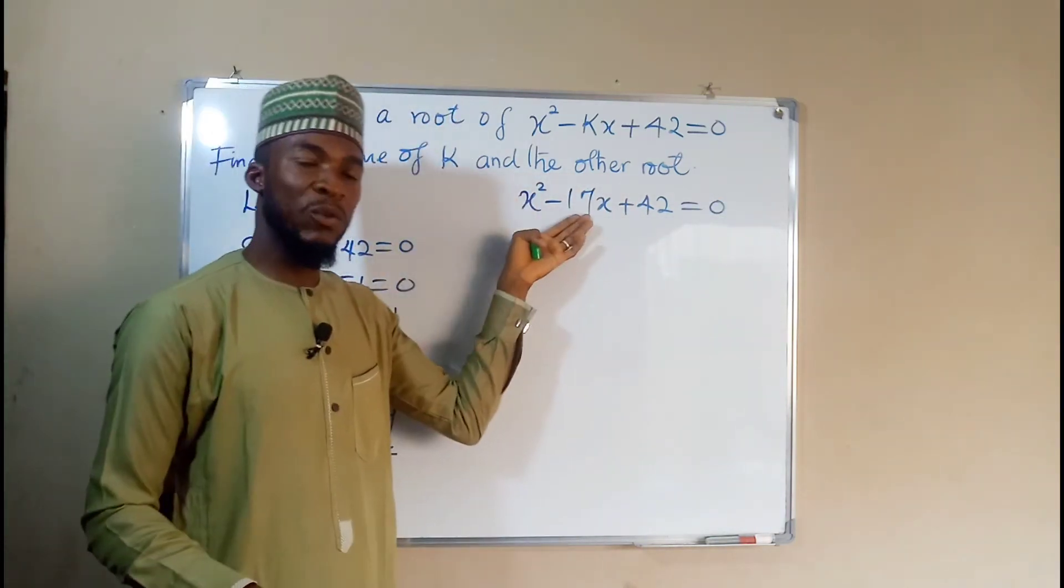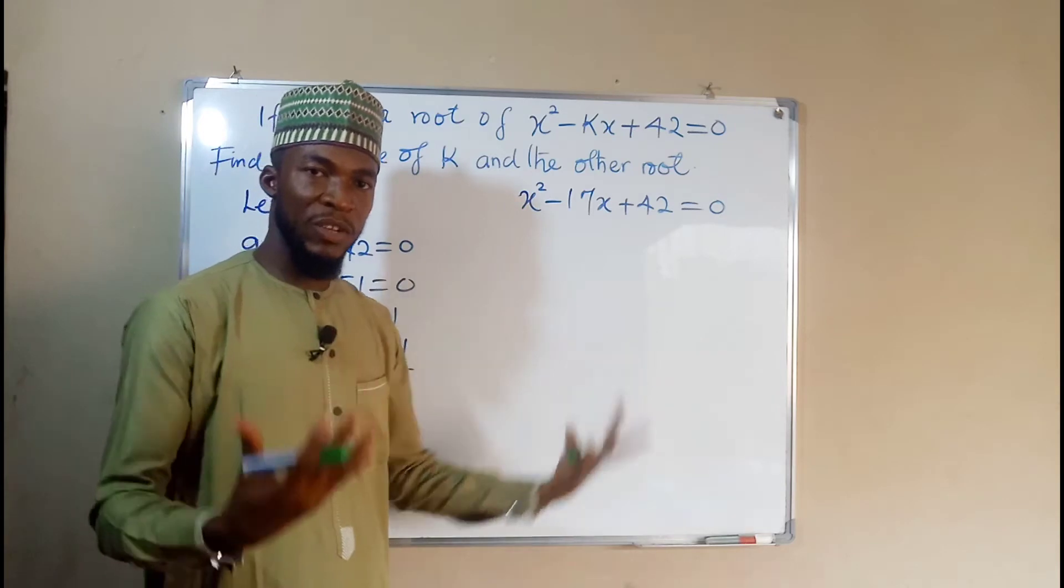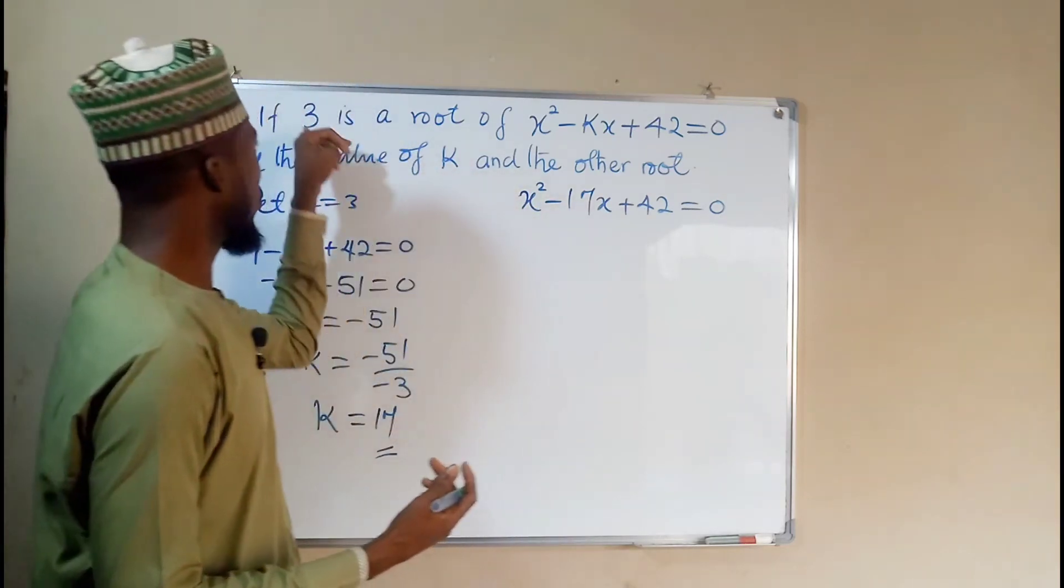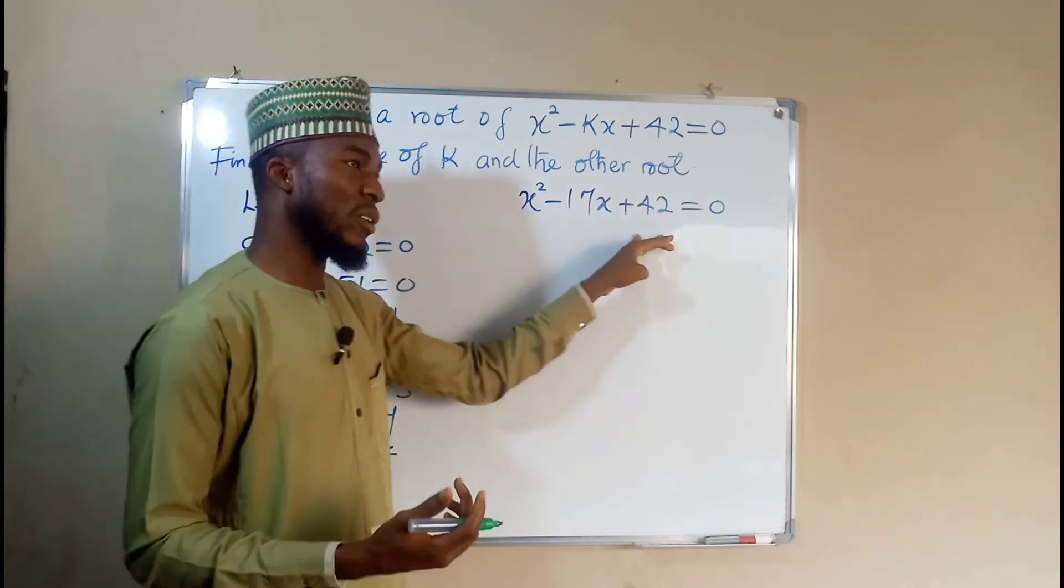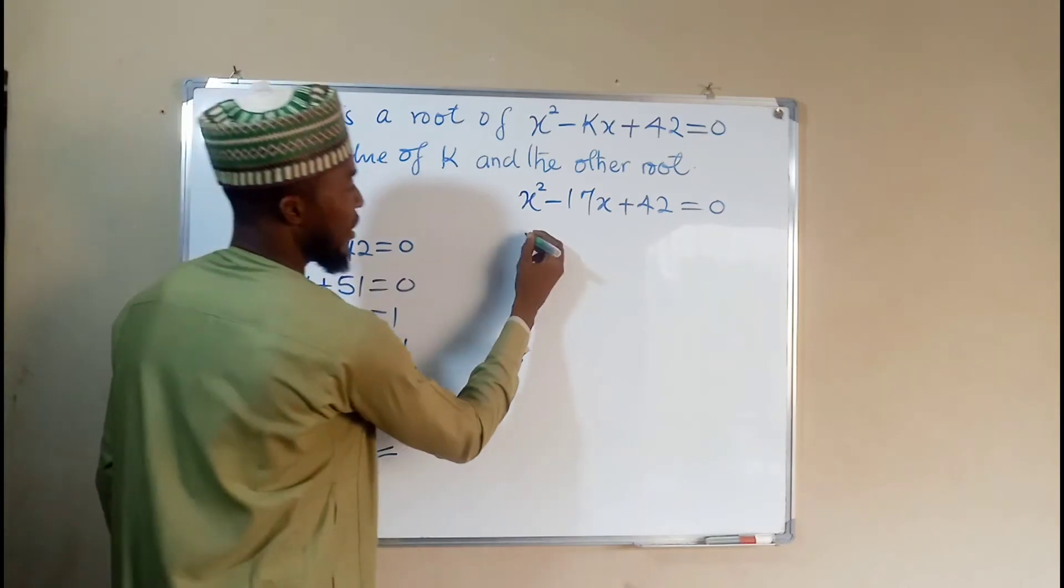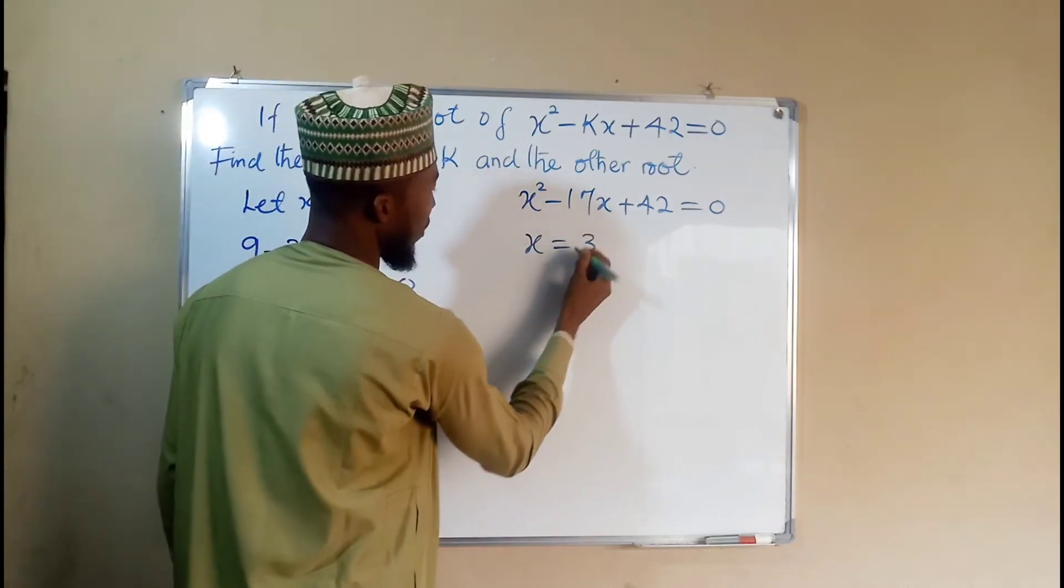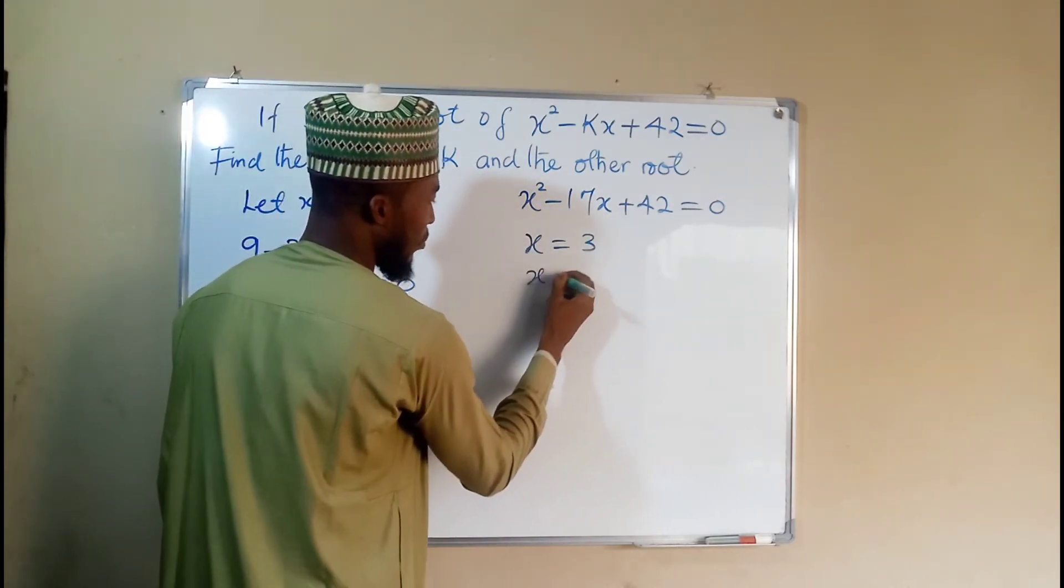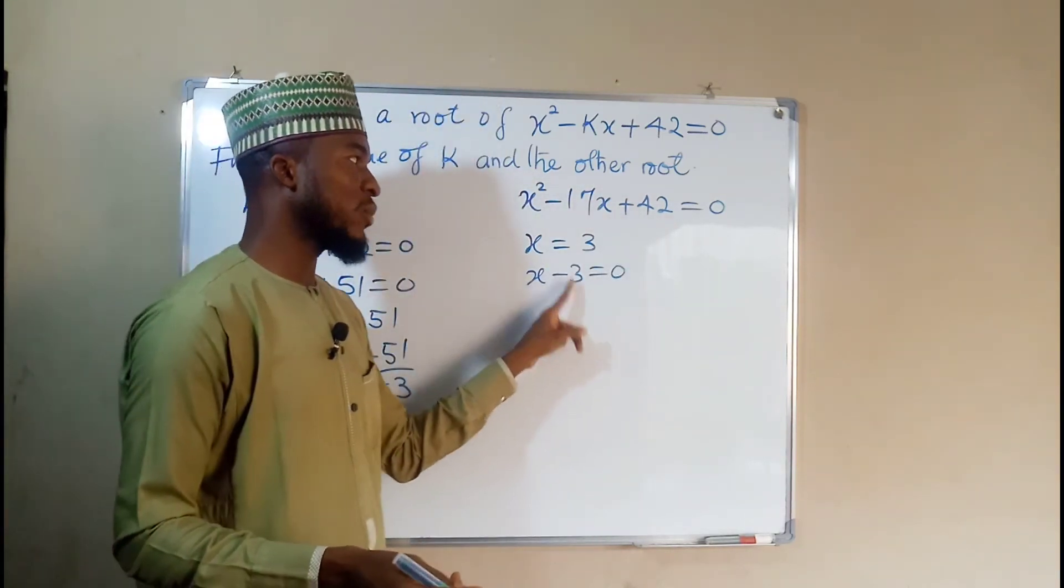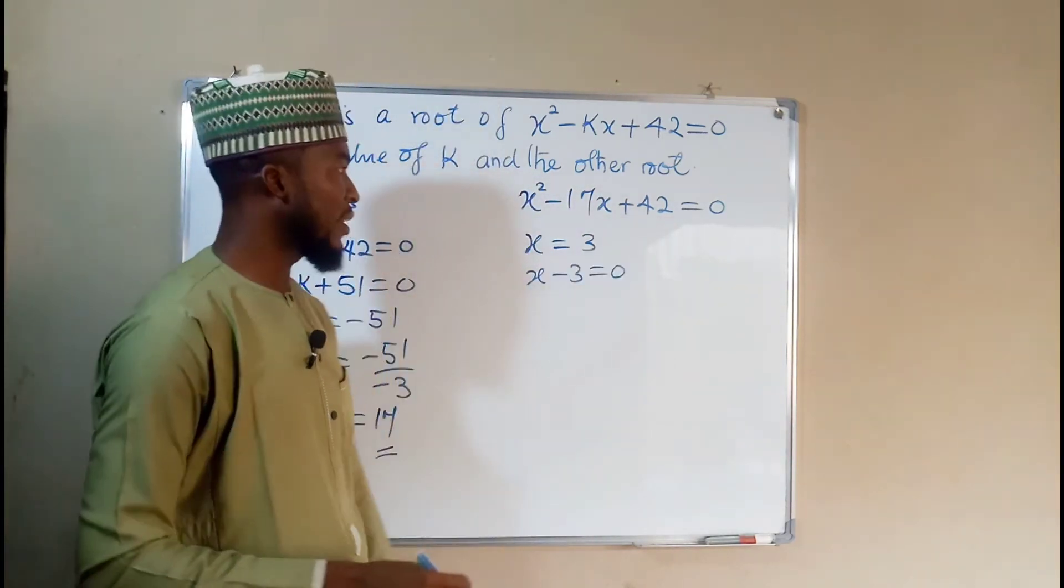We can solve this quadratic equation by any means to obtain the two roots. But since we are given one of the roots of this quadratic equation, we can transform it into a factor. If x is equal to 3, we say x minus 3 is equal to 0. And x minus 3 is one of the factors of this quadratic equation.